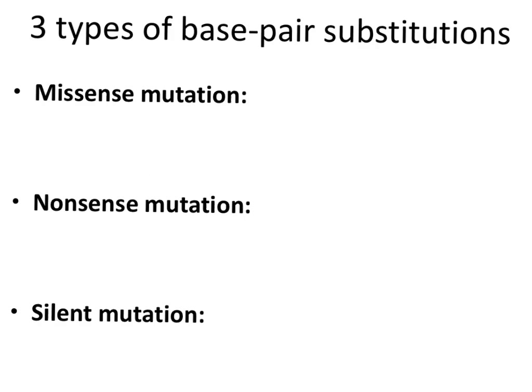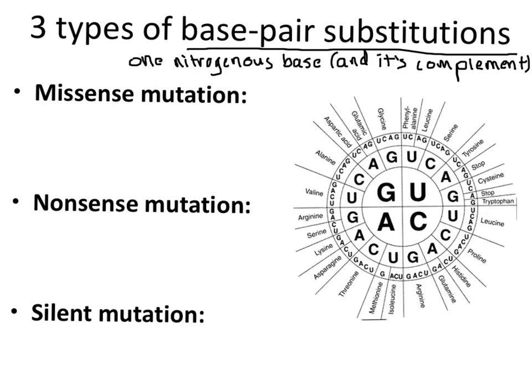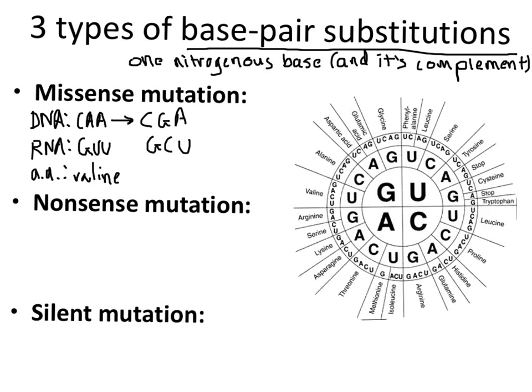Let's focus on mutations that happen at one point in the DNA, starting with base pair substitutions. As the name implies, one base pair or one nitrogenous base changes, and that could have several effects. First, there could be a missense mutation, which occurs when one letter is substituted for another such that a new amino acid occurs in the protein. For example, if the original DNA sequence was CAA, the RNA sequence would be GUU, coding for valine. If a mutation changed the DNA to CGA, then the RNA would read GCU instead, which codes for alanine — a new amino acid that might cause the protein to function abnormally.